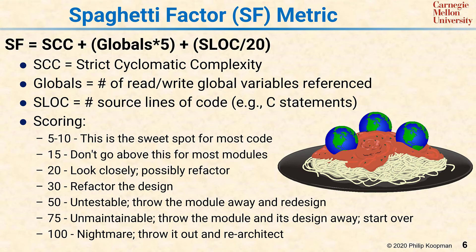But once the number gets too high — say around 15 — you really don't want to be doing that except where you really need to. Around 20, it's time to do a design review and look at refactoring the code. Around 30, you probably want to refactor the design and break things up. There are exceptions — for example, a flat switch statement handling different byte values in a network message dispatcher is okay as a one-off exception. Around a spaghetti factor score of 50, your software is probably untestable unless it's a special case, and you should be throwing the module away and redesigning. At 75, not only is it untestable, but probably every time you touch it you break it and it's unmaintainable. Around 100, it's basically a nightmare — just throw the whole section away and start over.